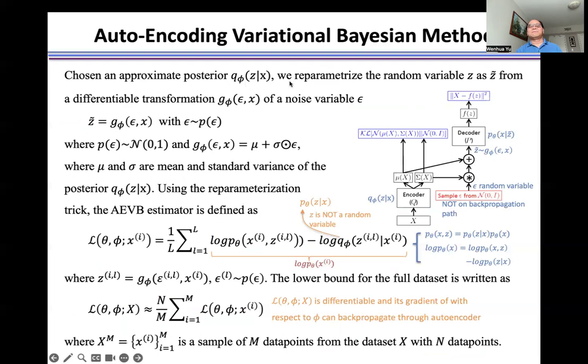we reparametrize the random variable z as z-wave from a differentiable transformation function g. Namely, we introduce a random variable epsilon from a normal distribution. And through this transformation function g, we change the random variable to a deterministic variable.